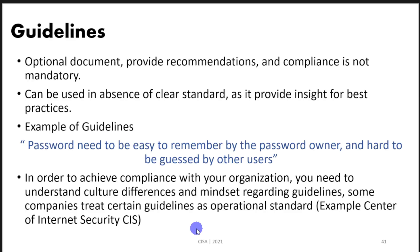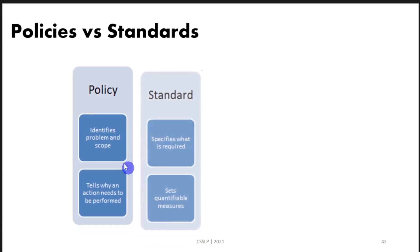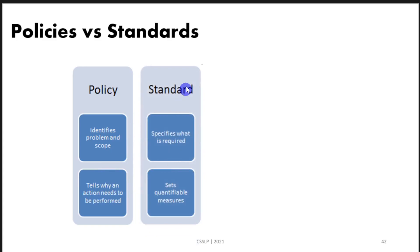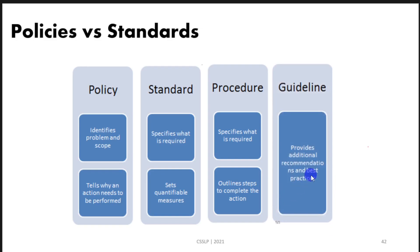So that was all about policies, standards, procedures, and guidelines. To summarize the differences: policy identifies the problem and tells what action needs to be performed; standard specifies what is required and sets quantifiable measures to ensure compliance with the policy; procedures specify what is required and outline the steps to complete an action; and guidelines are optional, providing additional recommendations. I hope this was informative and clear. See you in the next video — please like and share the video if you enjoyed it, and consider subscribing to our channel to support our content creation. Have a great day.